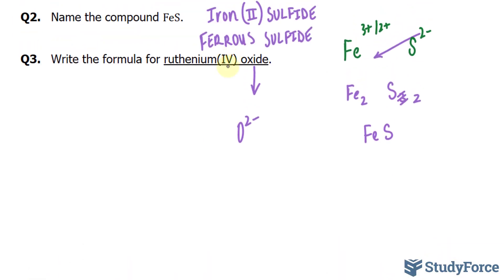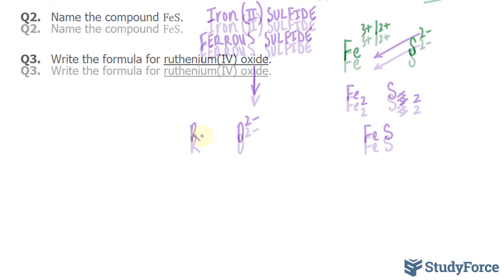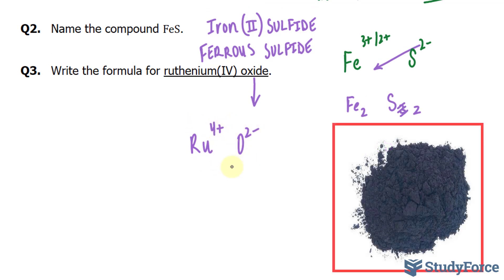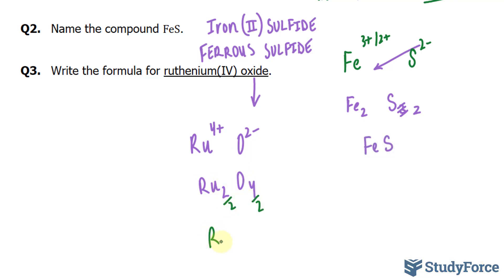But we're told that it's 4, so we have Ru 4 plus, these two criss-cross, and we reduce, divide this by 2, divide this by 2, we end up with Ru 1 O2. And there you have it.